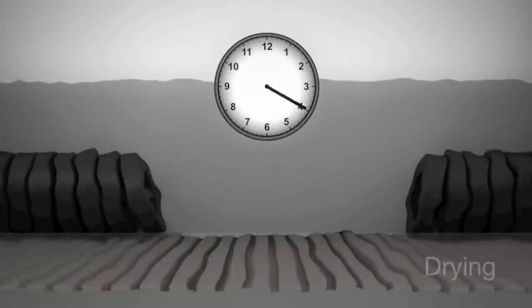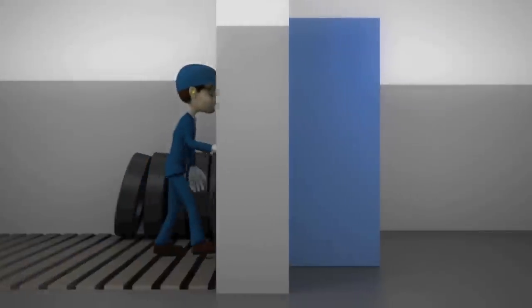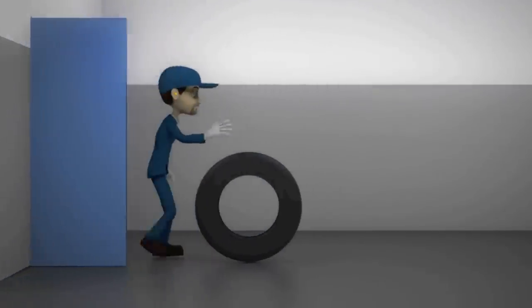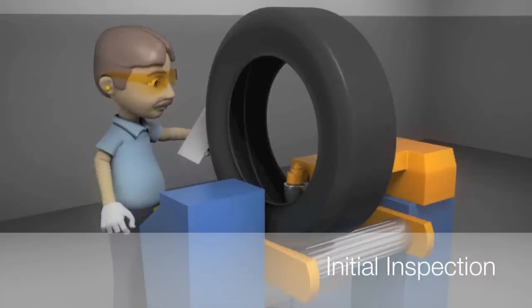In a drying room, the remaining moisture is eliminated. In the initial inspection, we thoroughly analyse all imperfections of the tyre.